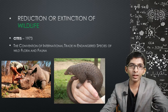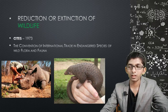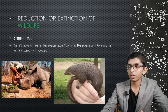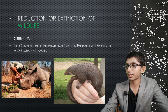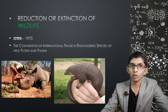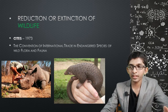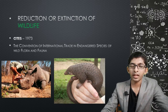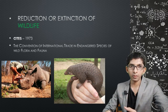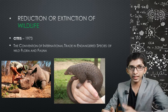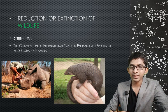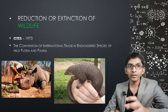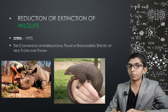The rhinoceros is poached for its horn. Pangolins are also endangered species, trafficked by humans. Endangered animals such as tigers and lions are those that are almost extinct. These animals face threats from humans, including poaching for skins, teeth, and other body parts.